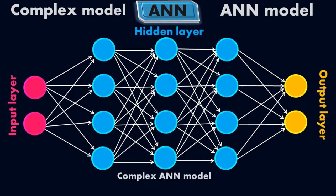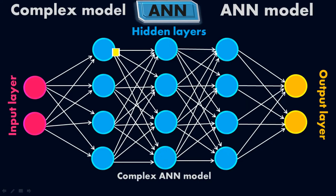Now look at this artificial neural network model. This is my input layer, these are the hidden layers, and this is the output layer. In the input layer I have two cells, which means I have two inputs. In the hidden layers I have three hidden layers with four neurons in each layer — hidden layer one, hidden layer two, and hidden layer three. In the output layer I have two cells, which means I have two outputs.